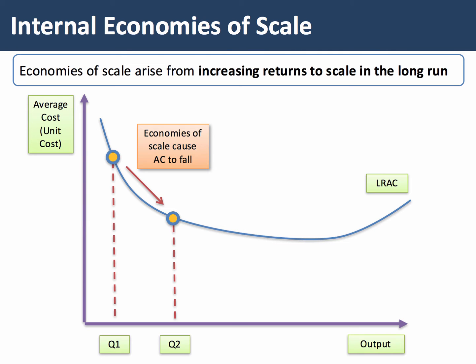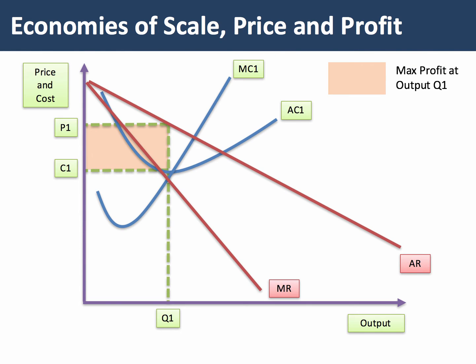What I want to show you is how you can use a diagram to show the impact of economies of scale on price and profit. Here's an initial diagram — we can see a downward sloping market with AR and MR revenue curves for the firm, so this is obviously imperfect competition. Initially the profit maximising output is Q1, where MC meets MR, that allows the firm to charge price P1 and level of cost C1. So this area here is the level of supernormal profit.